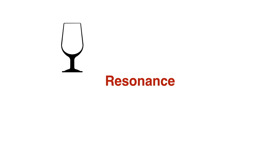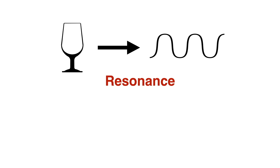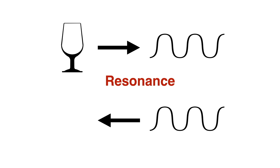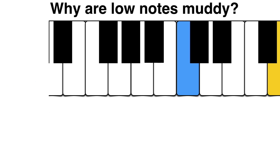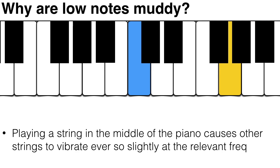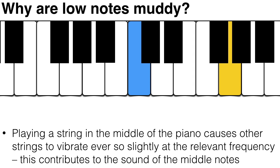As mentioned in a previous lesson, singing into a wine glass at its natural frequency can cause the wine glass to start vibrating and even break. This is because just like a vibrating object can create a particular note, the sound wave from that note can conversely cause the object to start vibrating. So playing a string in the middle of a piano causes other strings at the extreme top and bottom to vibrate ever so slightly at the relevant frequency, which contributes to the sound of the middle notes and makes them richer and more interesting.